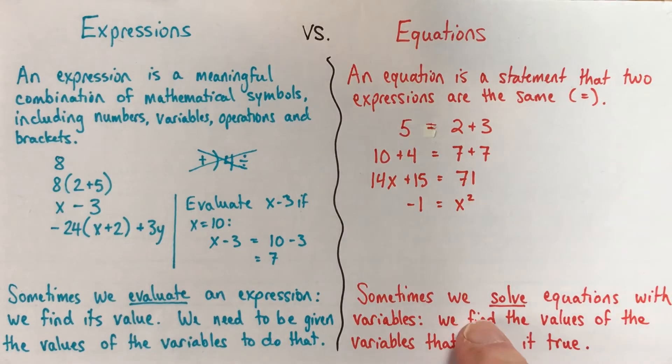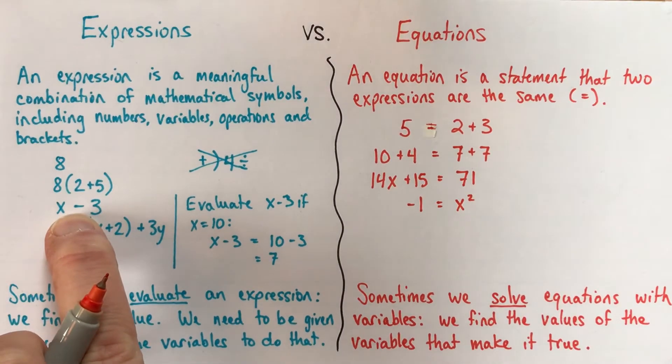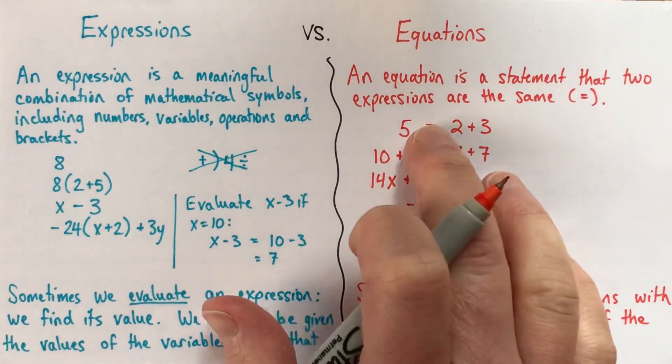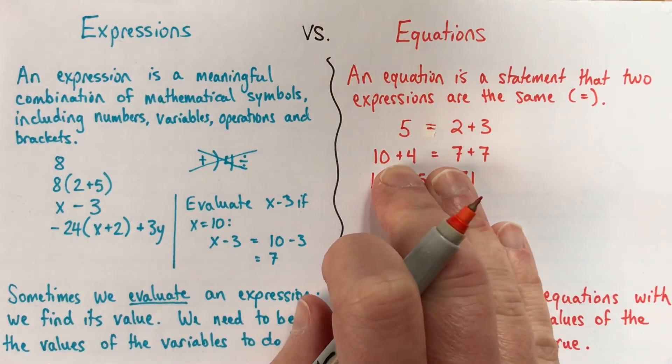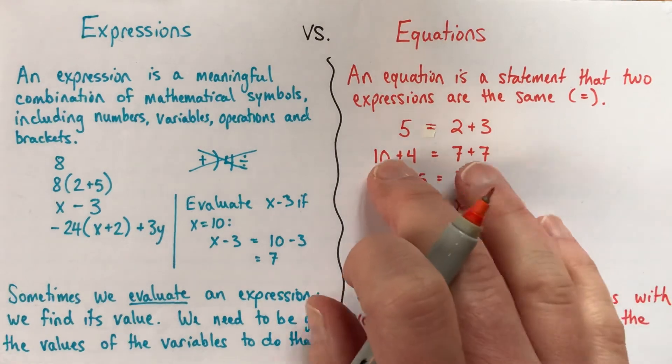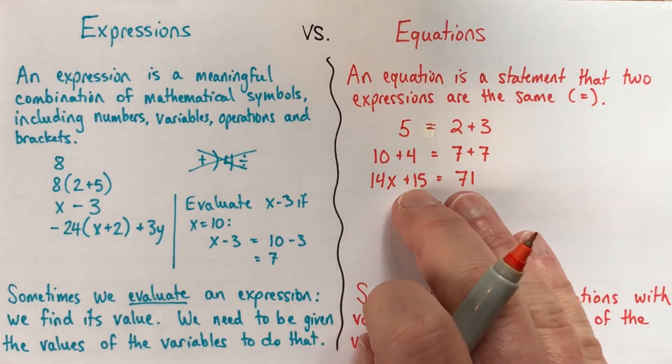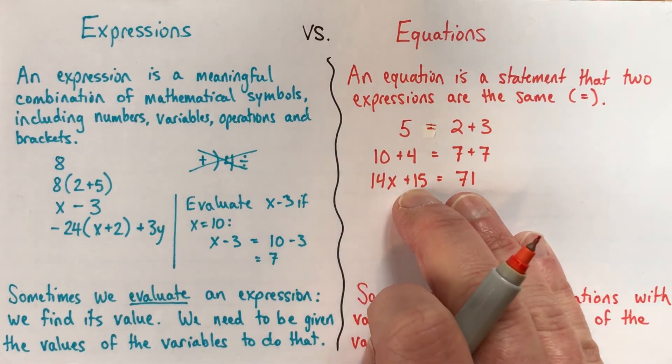And something that we sometimes do with equations, I really want to emphasize here, we can just sometimes talk about expressions without evaluating. We don't necessarily want to evaluate. Sometimes we do. Same with equations. We might want to, this line right here, 10 plus 4 equals 7 plus 7, that might be our final answer to some question. Or we might move on from here to something else without showing that those are worth 14. Same with equations. This might be our final answer to something, that might be what we're aiming for. Or it might not be.